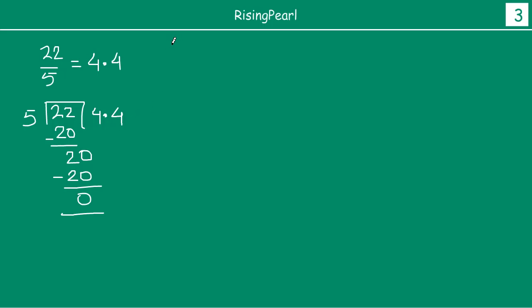Let us take something like 31 by 7. Let's see what happens when we expand this. Let's divide. So 31 is our dividend and 7 is our divisor. We have 7 fours are 28.